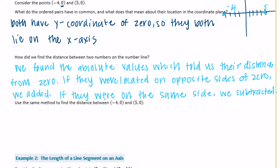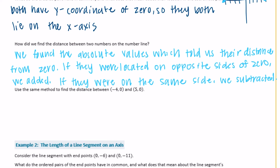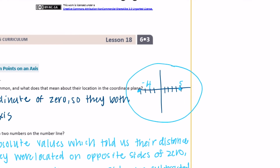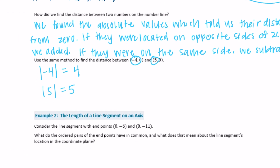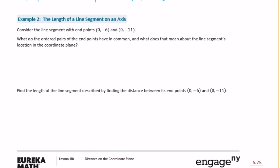To find the distance between negative four, zero and five, zero, we find the absolute value of the x-coordinates since those are what differ. The absolute value of negative 4 is 4, and the absolute value of 5 is 5. Since negative 4 and 5 are on opposite sides of zero, we add them. So 4 plus 5 is equal to 9 — they are 9 units apart.